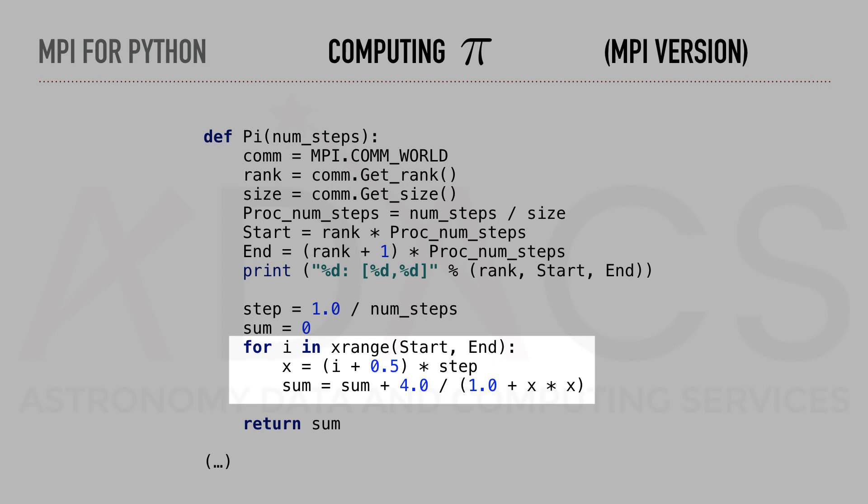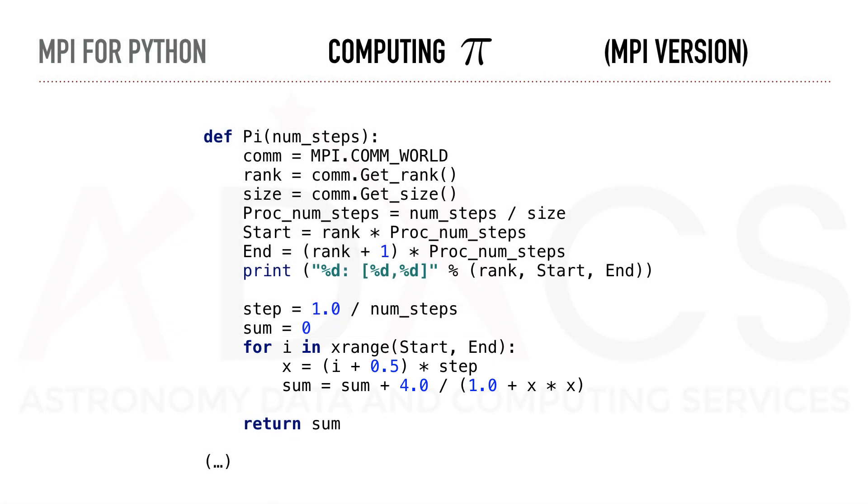Then, each process will compute its section of pi in the for loop. The main difference here with the serial version is that the loop will become smaller and smaller as we add processes. This is a classic divide and conquer method, common in computer science.